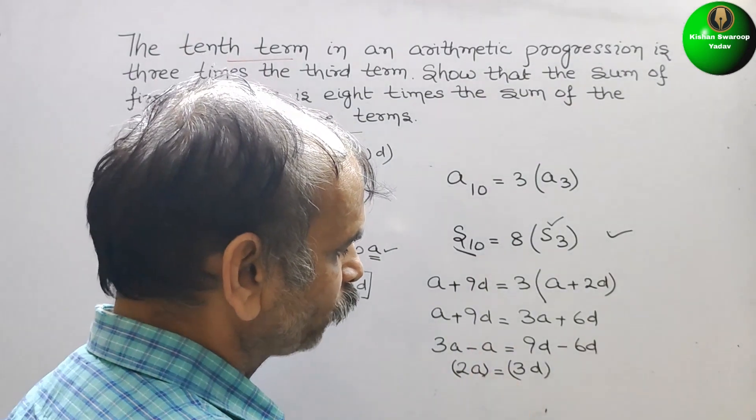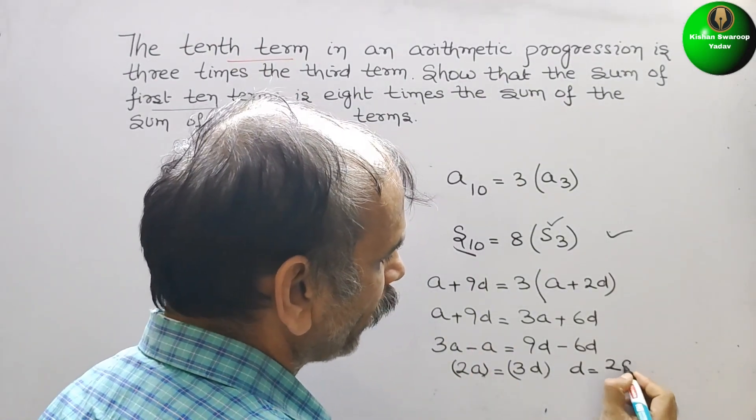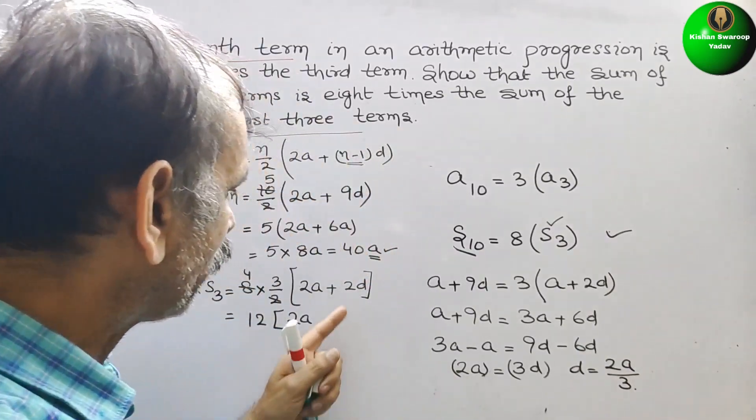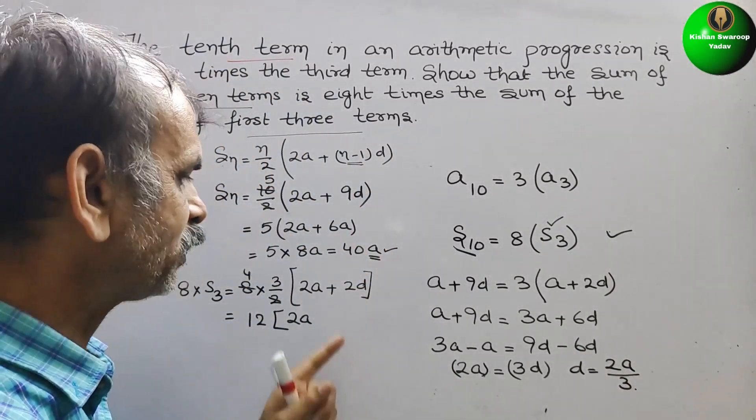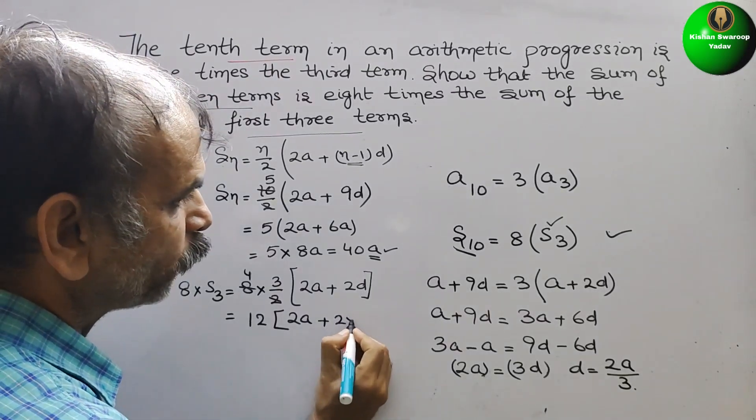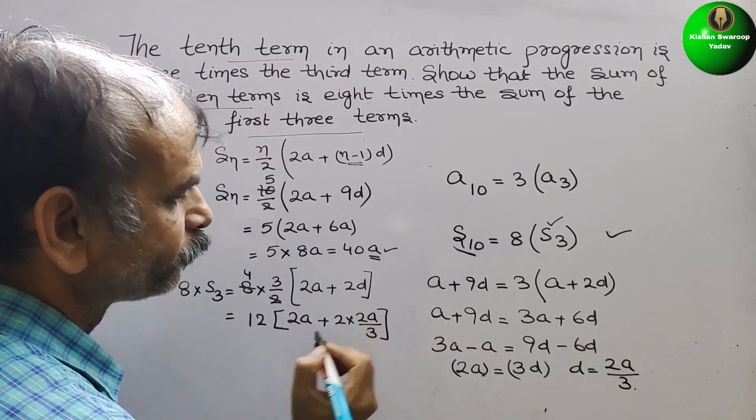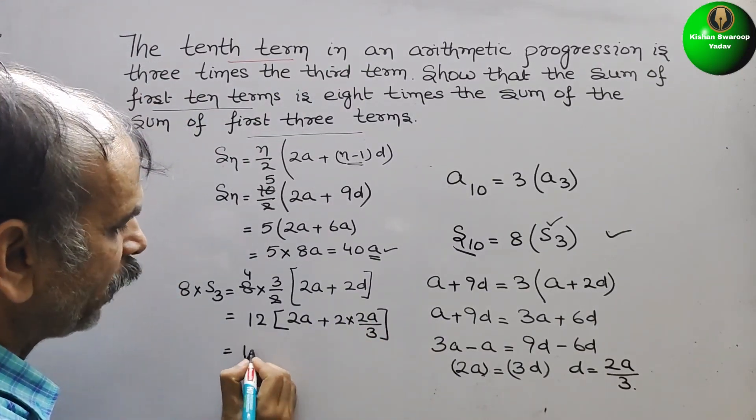So what is your D? D we can say is equal to 2A by 3. But here they have given 2D, so just replace it. Plus 2 into 2A by 3. Solve this. So here it is 12.